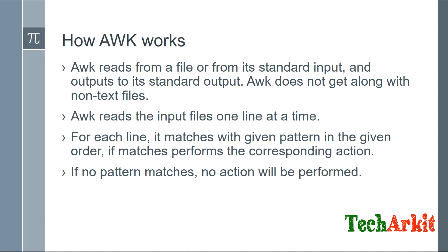For each line, AWK matches with the given pattern in the given order. If it matches, it performs the corresponding action. So if you have 1 lakh lines in a file, it goes to each and every line, matches the pattern you are looking for, and performs the corresponding action. If no pattern matches, no action will be performed.